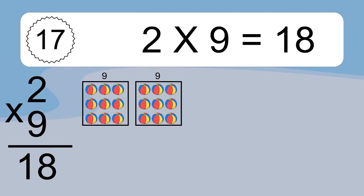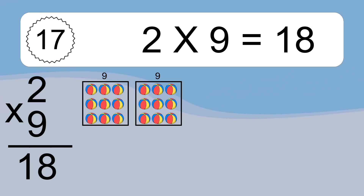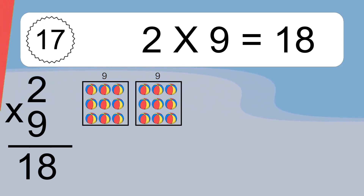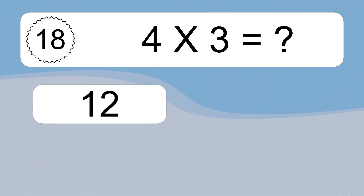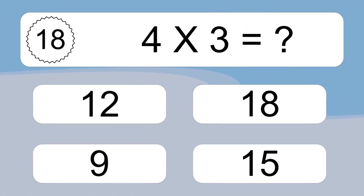2 times 9 equals what? We have boxes, and each box has 9 colorful balls inside. If you count all the balls in all the boxes together, you will have 2 times 9 balls. This equals 18 balls.